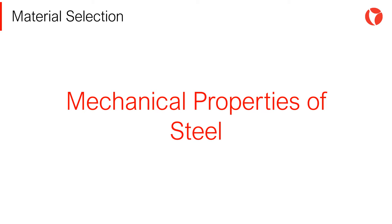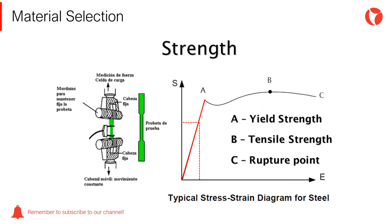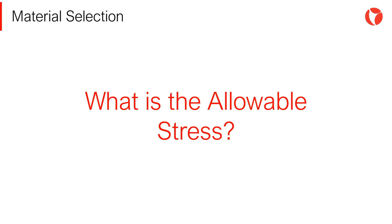First of all, the main mechanical properties of steel must be known. The basic mechanical properties of steel can be obtained through a typical stress-strain test. The diagram shows that point A is known as the yield point. If the tension load is released at any point below point A, the material returns to its initial state without any permanent deformation. When this point is exceeded, the material is no longer elastic, and releasing the load in this range leaves the specimen with permanent or plastic deformation. Point B is known as tensile stress, and point C is known as the rupture point. Interestingly, none of these points is used for the design of storage tanks.